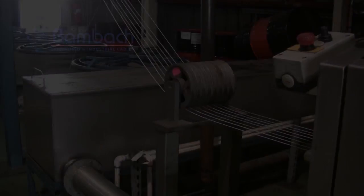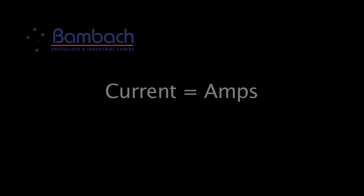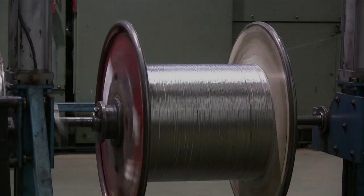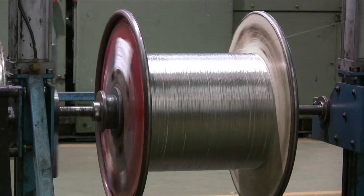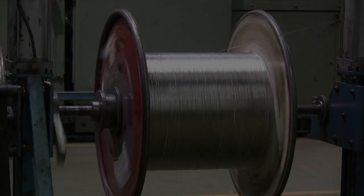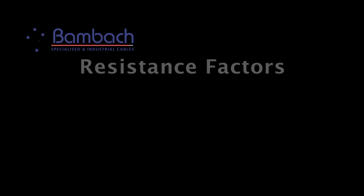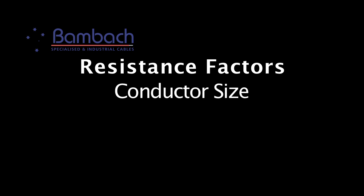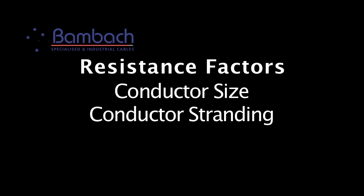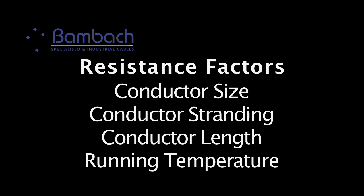The electrical current that flows through the conductor is measured in amperes or amps, but there is always a counterforce to this flow and it's called resistance, which is measured in ohms. Resistance depends on various factors including conductor size, stranding, length, and running temperature.